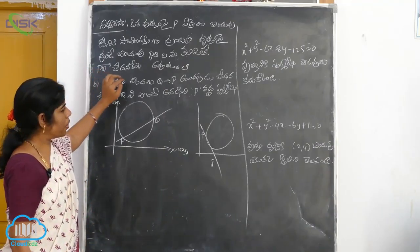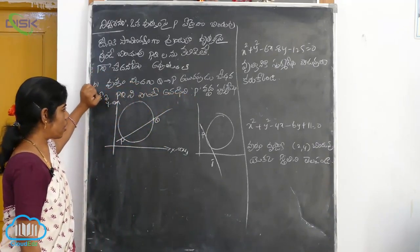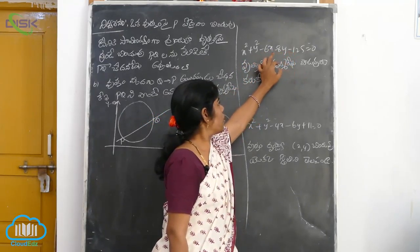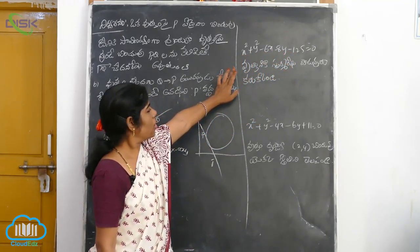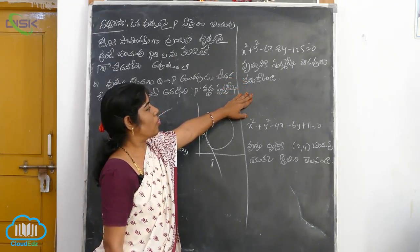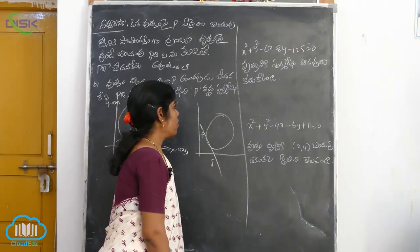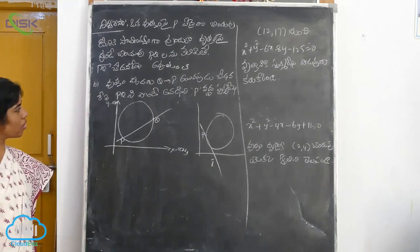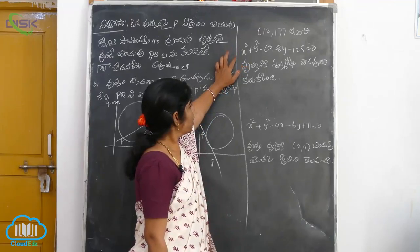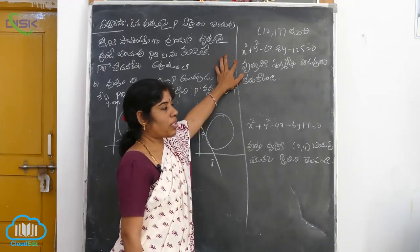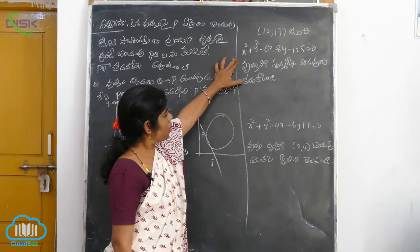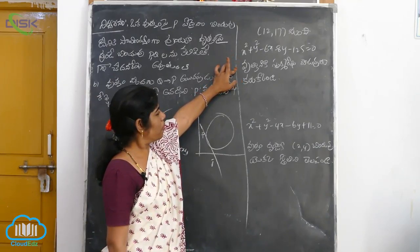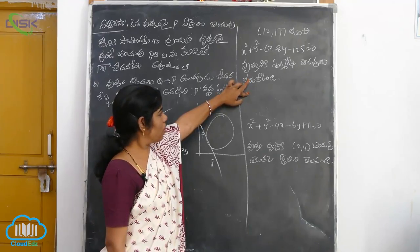So, if we have the equation: x squared plus y squared minus 6x minus 8y minus 125 equals 0. This is the same way.